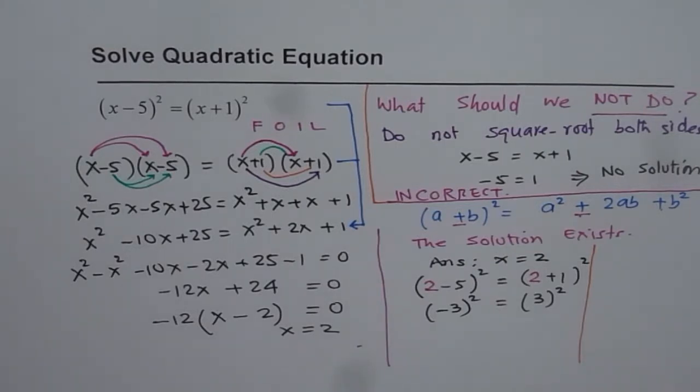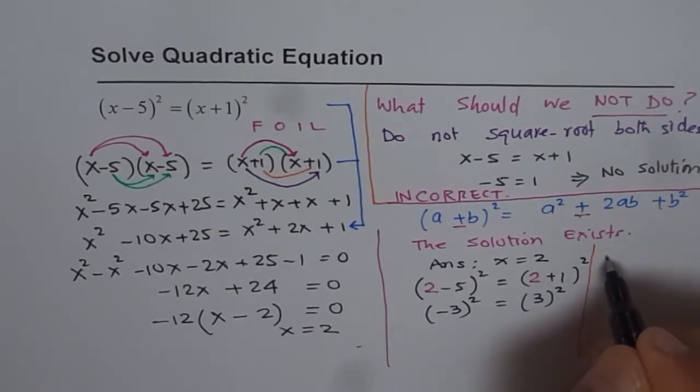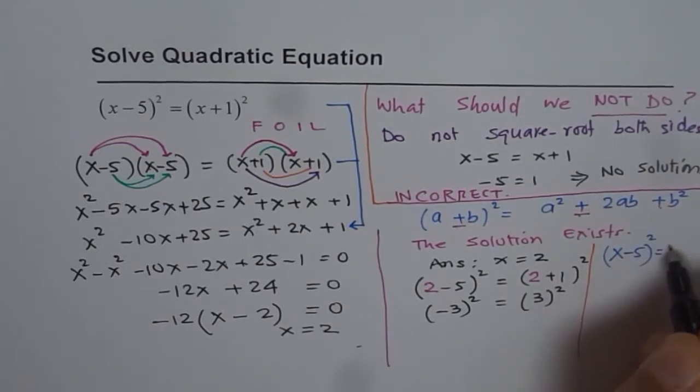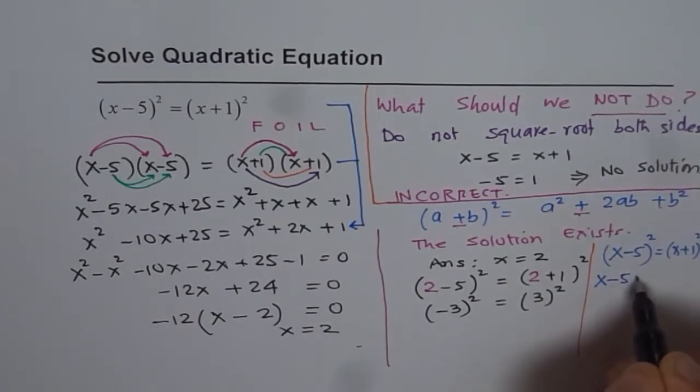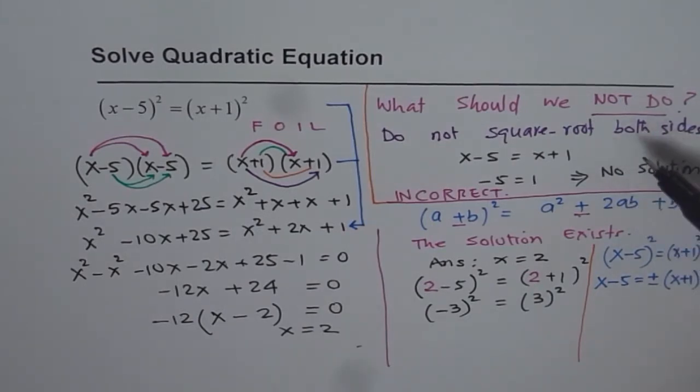Now the question is, could you have avoided all these steps and got your answer? The answer is yes. When you do square root, you started with x minus 5 whole square equals x plus 1 whole square. When you square root it, then it is x minus 5 equals plus and minus of x plus 1. Earlier we saw the plus part solution had no solution, but if you use the negative part, you do get a solution and the solution will be the same.